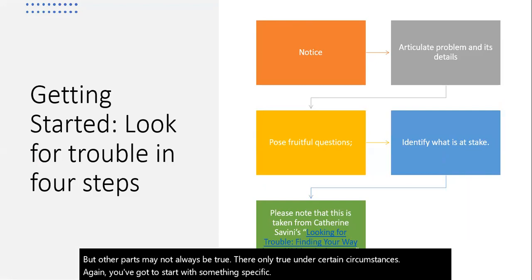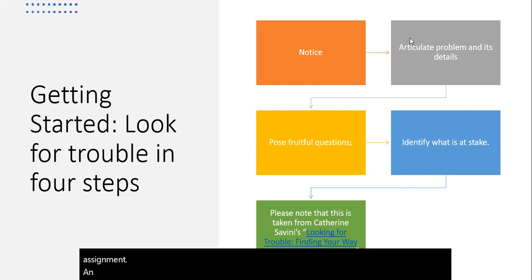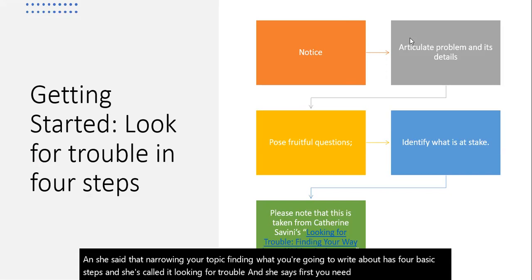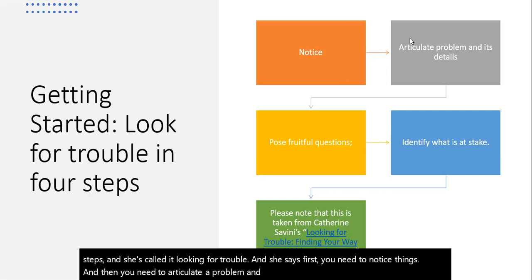Catherine Savini wrote an article titled Looking for Trouble, Finding Your Way Into A Writing Assignment. And she said that narrowing your topic, finding what you're going to write about, has four basic steps. And she's called it looking for trouble. And she says, first, you need to notice things. And then you need to articulate a problem and its details. Next, you pose fruitful questions. And finally, you identify what is at stake.